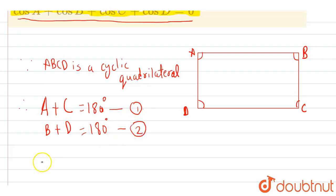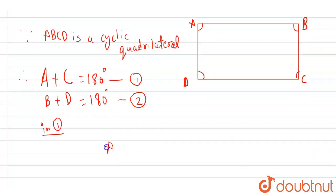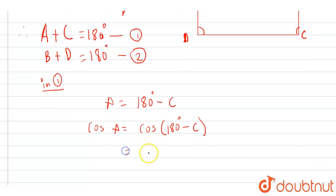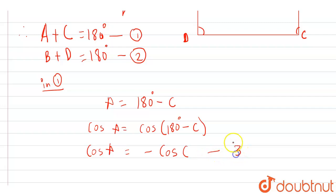Now in equation one, we can write A equals to 180 minus C, by shifting C to the right-hand side. Now if we apply cos on both sides, we get cos A equals to cos(180° − C). As we know, cos(180° − θ) equals minus cos θ, and here θ is C, so it will be minus cos C. So cos A equals to minus cos C. Suppose this is our equation three.